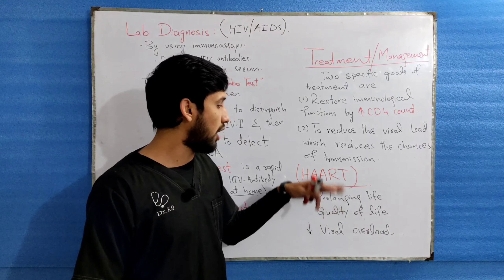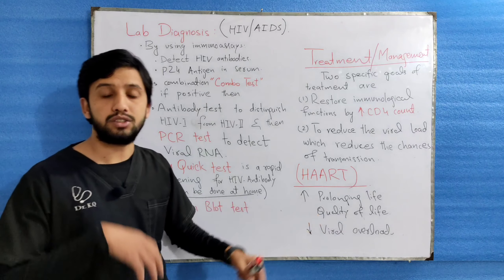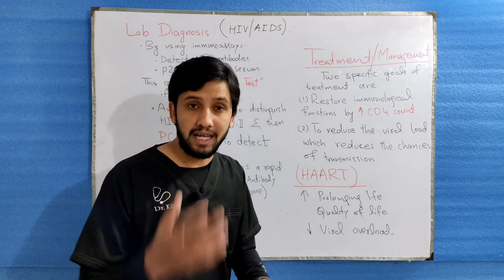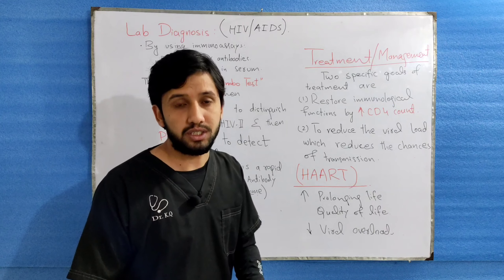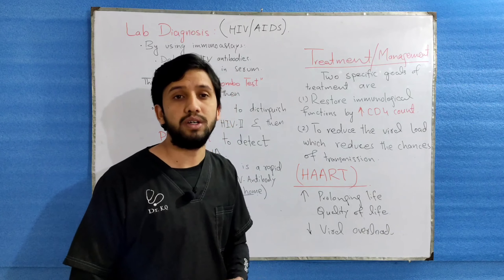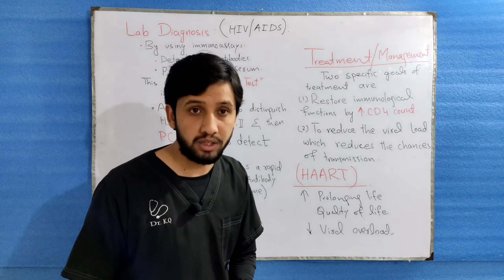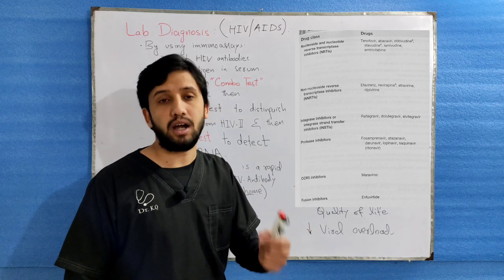Antiretroviral therapy is used for HIV infection, and this involves highly active antiretroviral therapy (HAART), which is a combination of three or four drugs. Antiviral drugs are used for prolonging life, improving quality of life, and decreasing the viral load, so there will be less chance of opportunistic infection and less transmission of the virus to other persons.